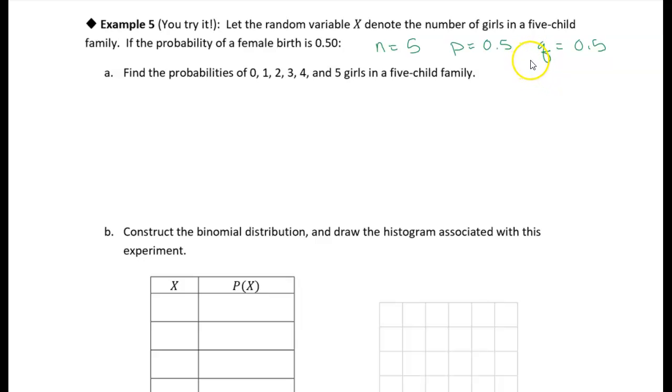So again, the success or failure is just an outcome and its complement. We're going to assume that it's either going to be a girl or it's going to be a boy. That's the assumption that we have to make. And so the probability of a girl is 50%, probability of a boy is 50%.